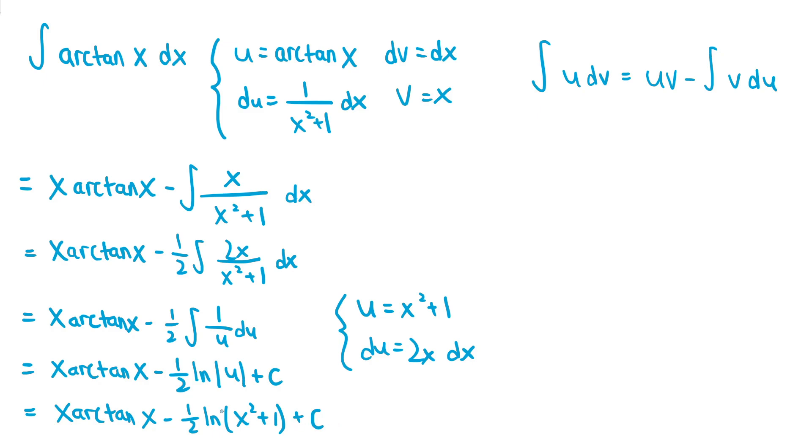And we don't need the absolute value around ln of x squared plus 1, since x squared plus 1 is already always positive. So the absolute value becomes redundant. So the integral of arctan x is just x arctan of x minus 1 half ln of x squared plus 1 plus some constant c.